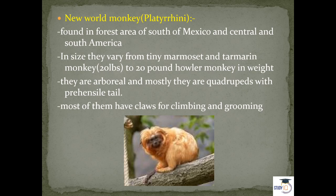Their size varies from the tiny marmoset and tamarin monkey to the 20-pound howler monkey. They are arboreal and mostly quadruped with a prehensile tail. As they live on trees, their tail has the prehensile ability — the ability to grasp and hold tree branches — whereas in earlier species it was the hands and feet that were prehensile. Most of them also have claws for climbing and grooming.